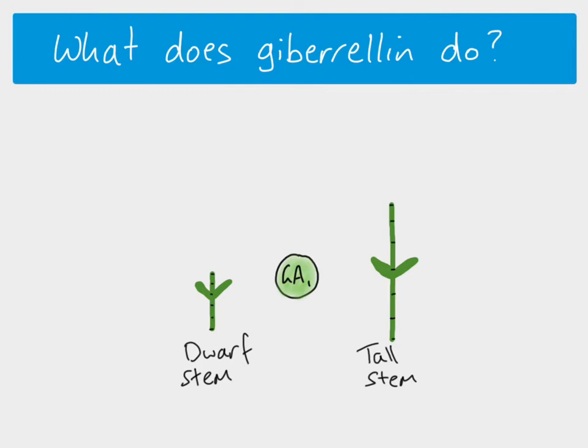that plant will get bigger. The chemical gibberellin promotes growth even if the plant has the dwarf stem phenotype and genotype. So if this is genetically controlled, we need to understand how the genetics links to gibberellin.